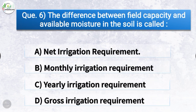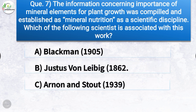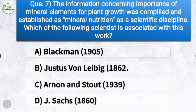Question number six: the difference between field capacity and available moisture in the soil is called what? The correct answer is option A, net irrigation requirement. Question number seven: the information concerning importance of mineral elements for plant growth, compiled and established as mineral nutrition as a scientific discipline — which scientist is associated with this work? The correct answer is option B, Justus von Liebig, in the year 1862.